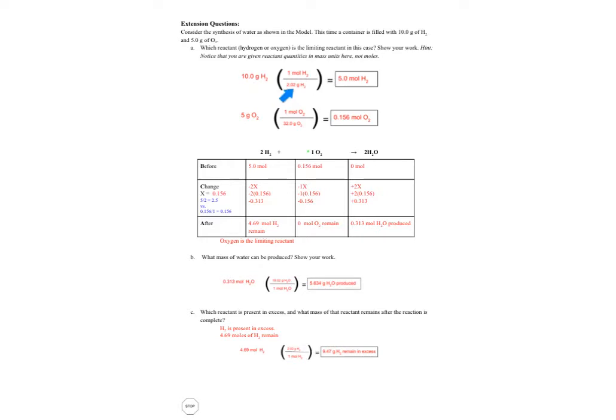So I took 10 grams of H2 divided by the molar mass of H2, so two times the mass of hydrogen, that gave me 5 moles and that's my starting amount. Then I take my 5 grams of O2 divided by the molar mass of O2, which is two times 16, and that gave me 0.156 moles as my starting amount of oxygen.